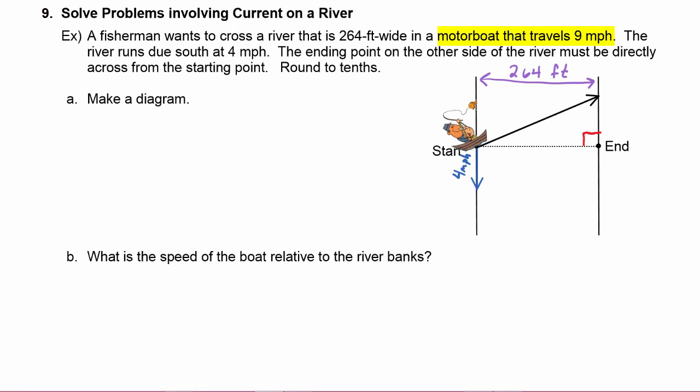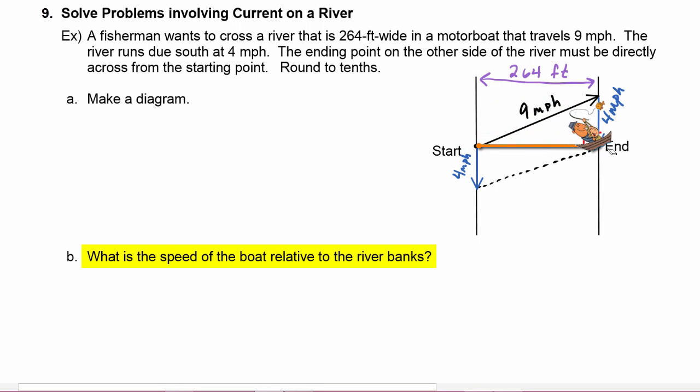So the fisherman will point the boat upstream and he is traveling at nine miles per hour so that the river can push him downstream at four miles an hour and he will end up at the ending point that he desires. We can see that our parallelogram is just about made. We can dot in this last side here and the dotted line here is the resulting path that we want, so this is the resultant. We are being asked what is the speed of the boat relative to the river banks. So we want to know what is the speed associated with this dotted line right here. Maybe we will call this x.